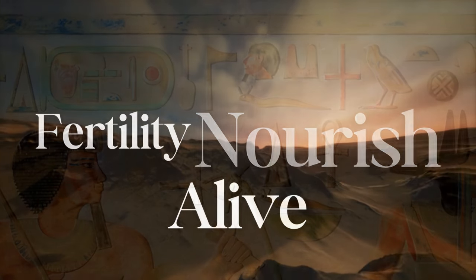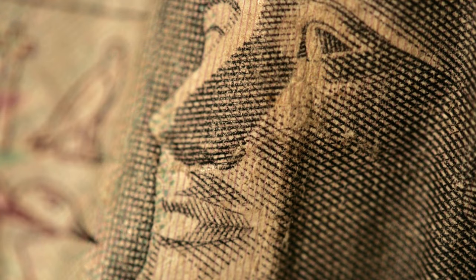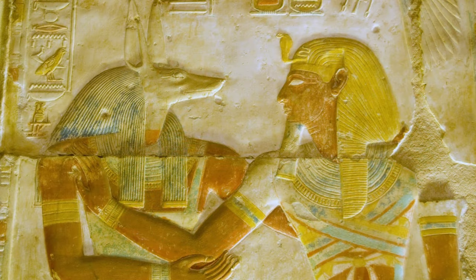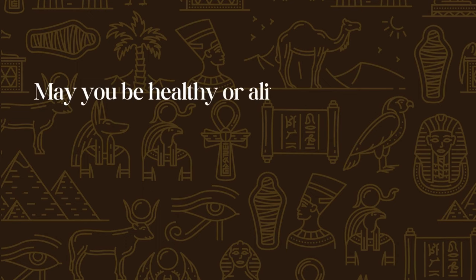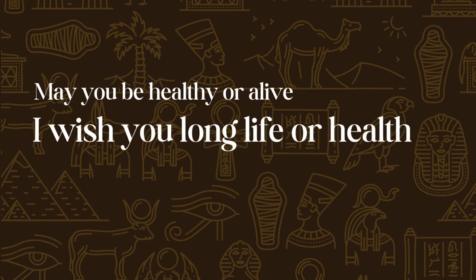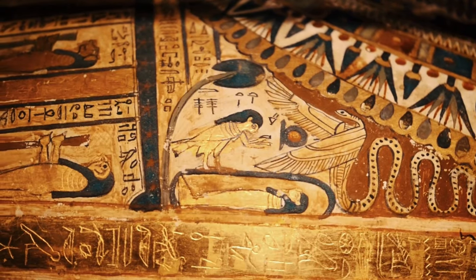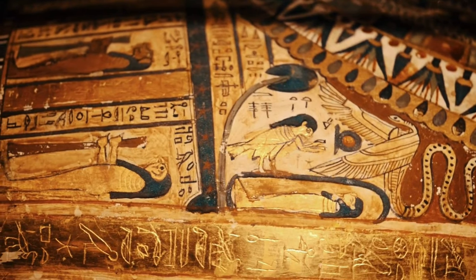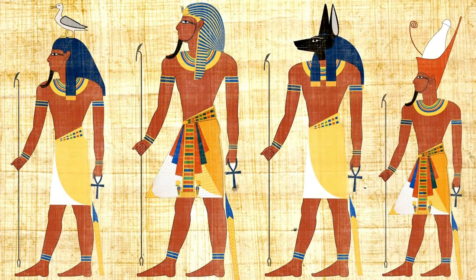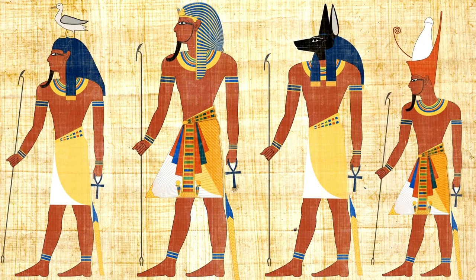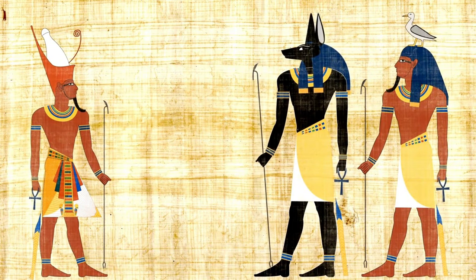The Ankh is often depicted as being passed on by gods to pharaohs, symbolizing that pharaohs are the living embodiments of gods, or that they're at the very least blessed by them. The Ankh was also used in various positive expressions and greetings such as 'may you be healthy or alive,' 'I wish you long life or health,' and 'alive, sound and healthy.' It was also one of the most common symbols in tombs and on sarcophagi, as the ancient Egyptians were strong believers in life after death. Because it was so often depicted with gods and pharaohs, the Ankh was also closely associated with royalty and divinity, and rulers were often worshipped as givers of life for the common people.